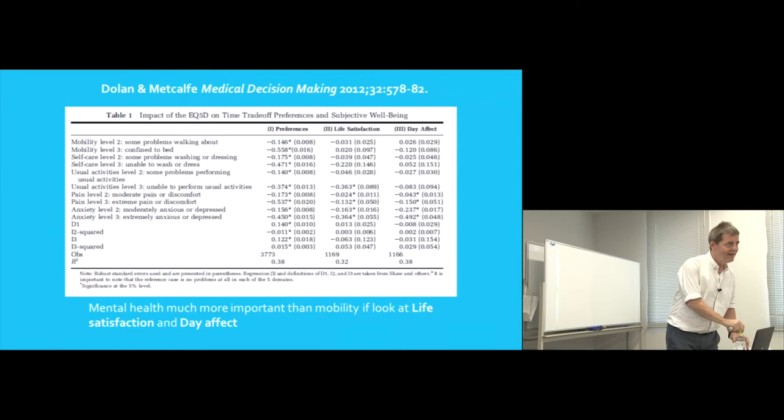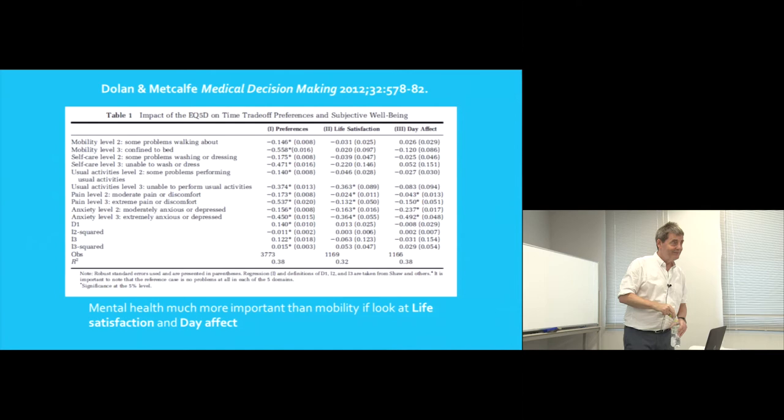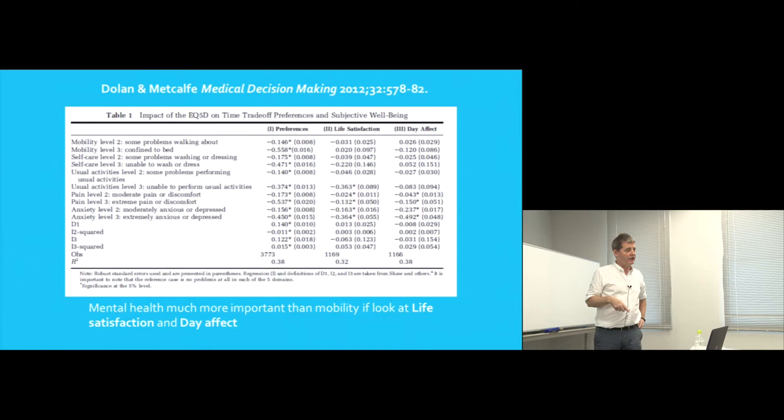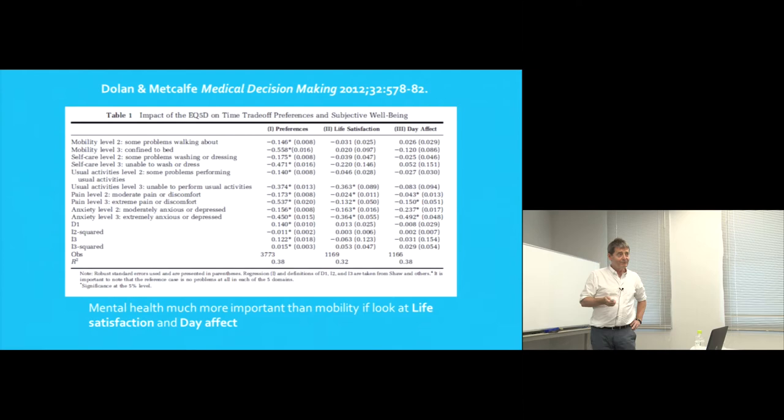Research suggests some of this life satisfaction is programmed in by the time you're 20 years old and is not adjustable by medical health interventions. So when you look at life satisfaction, you're looking at attitudes towards your situation rather than the health situation itself — which could cause a problem if you're trying to measure changes in life satisfaction in response to healthcare interventions, because you're not going to get much change.